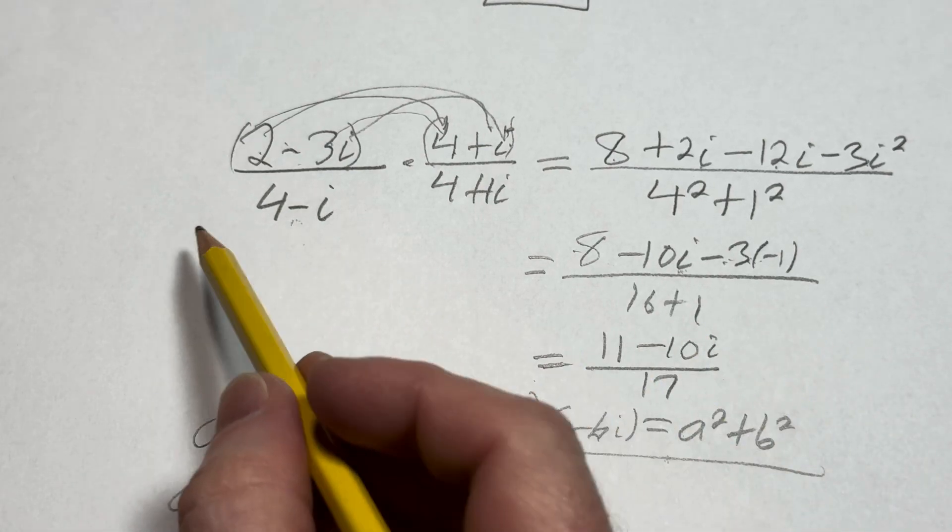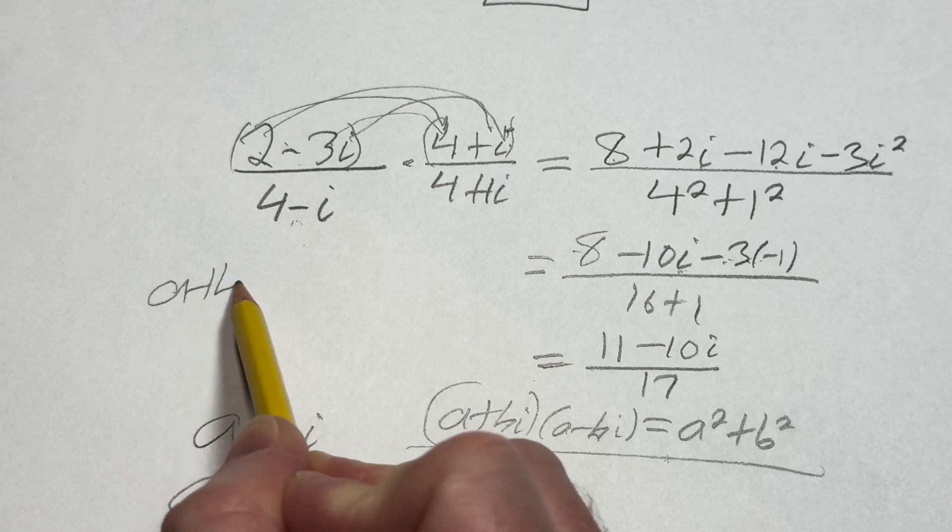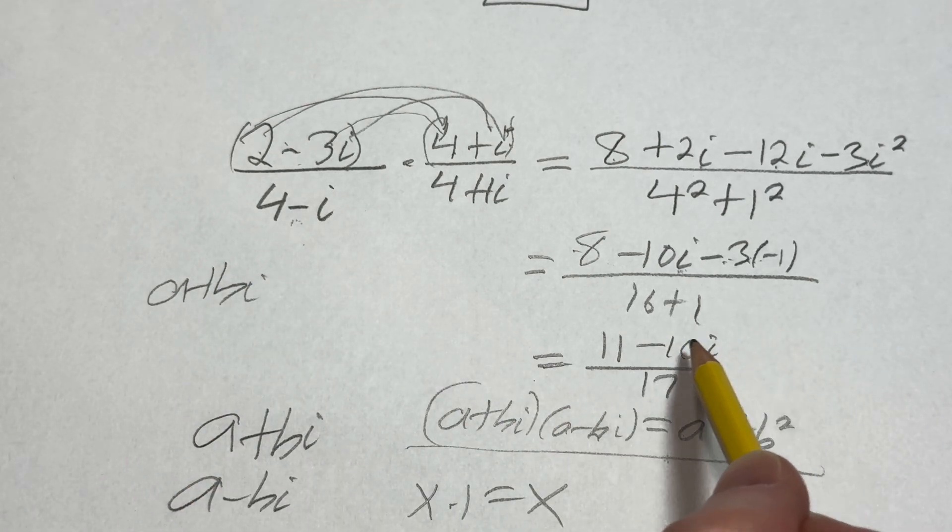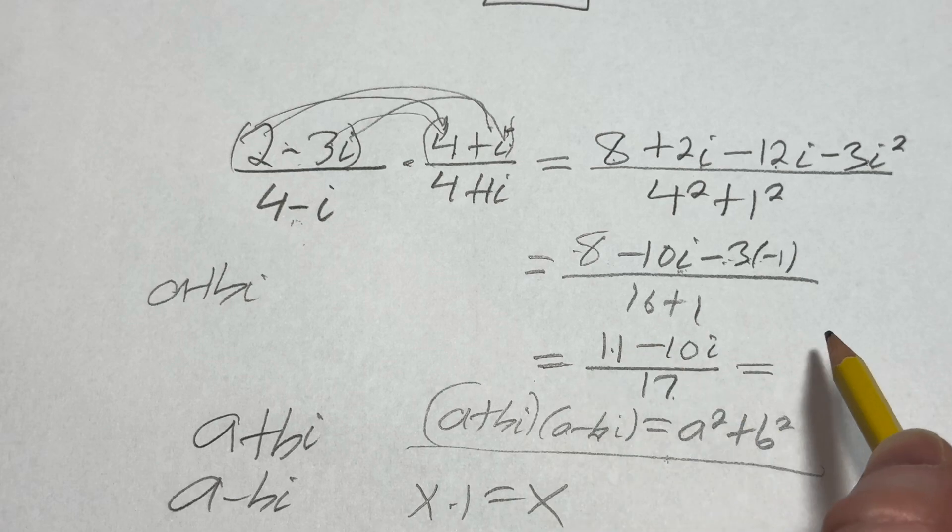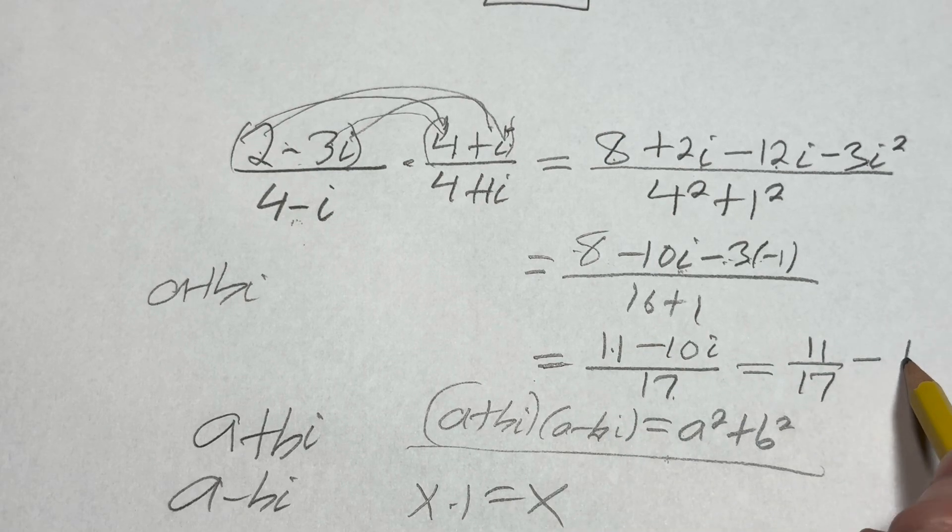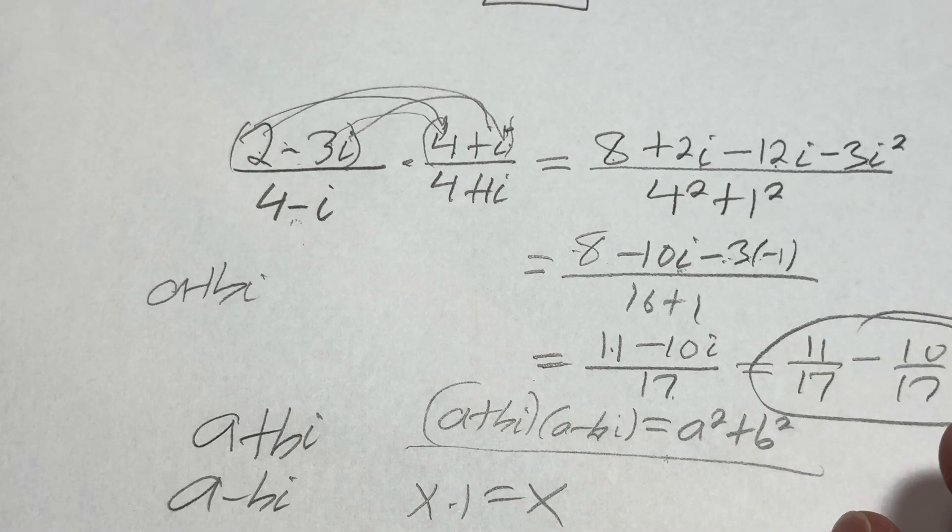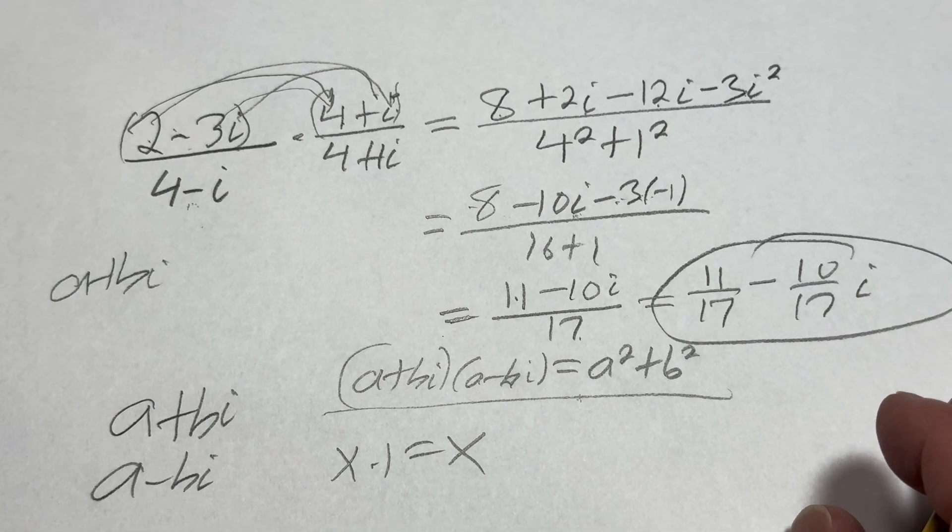Now, a lot of times they'll say to write your answer in the form a plus bi. So let's go ahead and do that. You basically just keep going. So this is going to be 11 over 17. Just break it up into two fractions. Minus 10 over 17i.